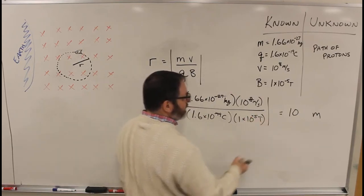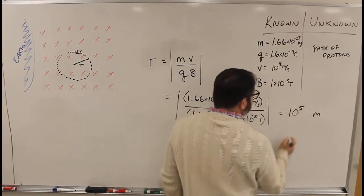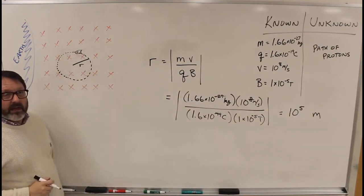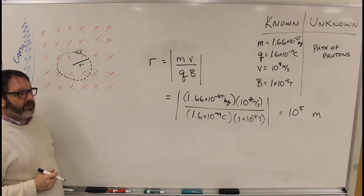So it's 10 to the—oh, sorry—10 to the minus 5. 10 to the 5th meters. So this radius will be 10 to the 5th meters. That is 100 kilometers.